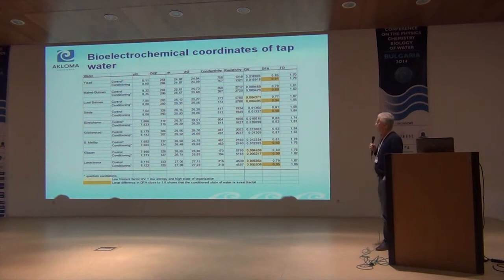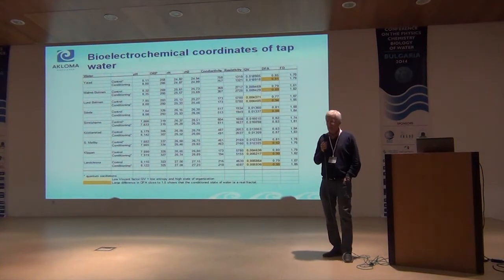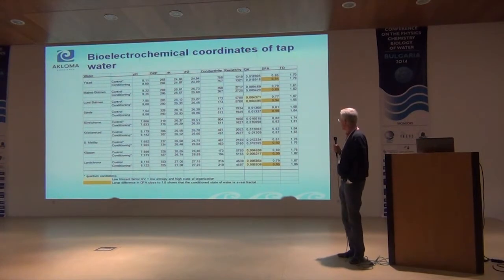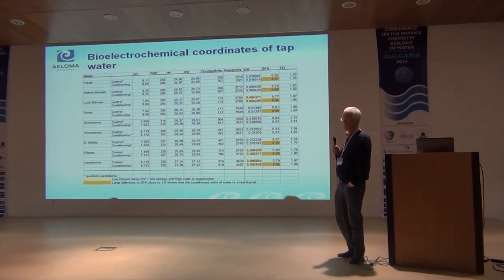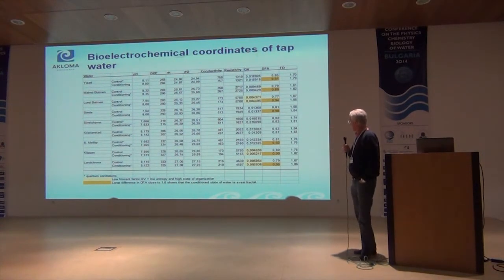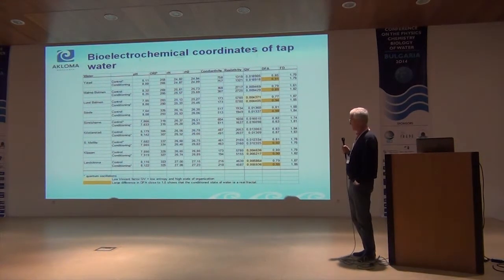Looking at tap water, there was actually no good tap water. We found three of them that were relatively good — the ones in light yellow were between 0.04 and 0.05. Still the QB value is insensitive to conditioning, while the DFA value in all waters also increased to come closer to one, which is the optimal value.